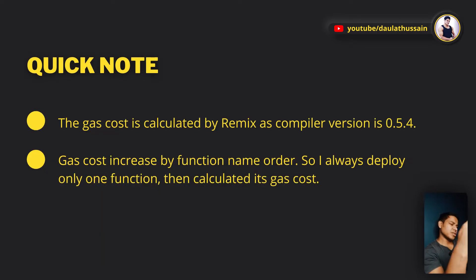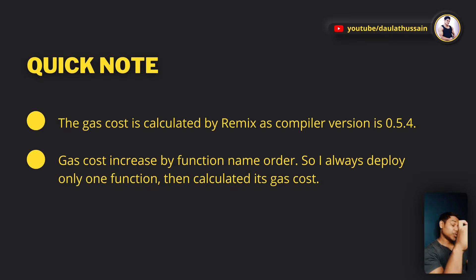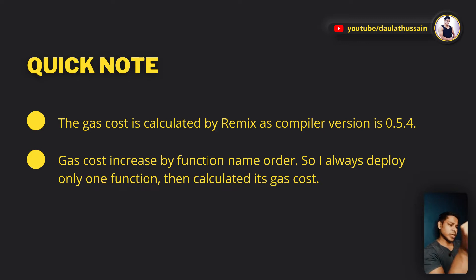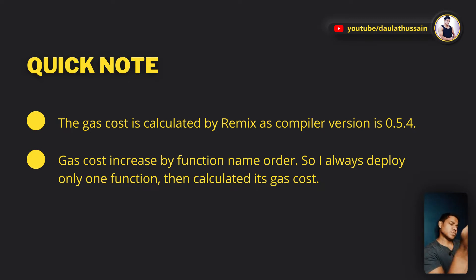Before diving into those 13 tips, a quick note: the Solidity version used for testing all the smart contracts and checking gas price is Solidity version 0.5.4. The data shared in this video relates to that version — gas price might differ with other Solidity versions but will be more or less similar. All contracts were written and tested in the Remix IDE.